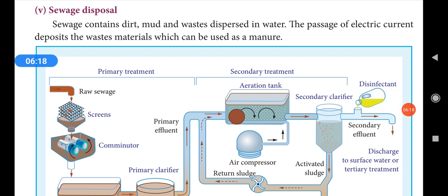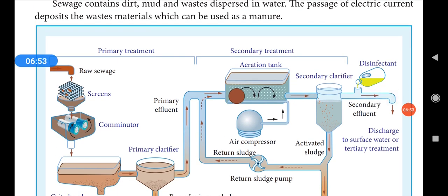Sewage disposal involves the recycling of sewage water — that is, drainage water. Unwanted materials are removed so that the water can be used for irrigation as manure water. Sewage contains dirt, mud, and waste dispersed in water. The passage of electric current deposits the waste material, which can be used as manure, leaving the water purified through primary and secondary clarification stages.